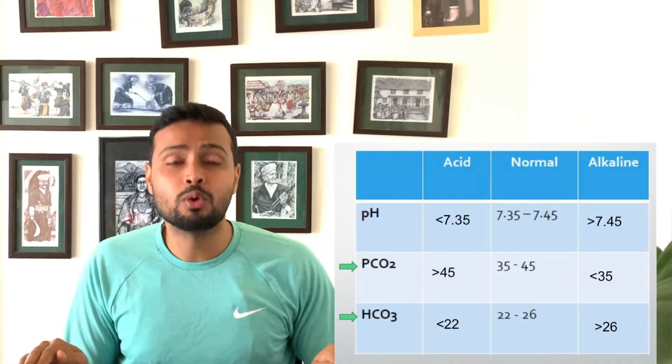Based on pH, we decide — depending on PaCO2 and HCO3 values — whether it is a metabolic or respiratory condition. PaCO2 is considered the respiratory component. Anything wrong with PaCO2 will be considered respiratory acidosis or respiratory alkalosis. The normal value for PaCO2 is 35 to 45.